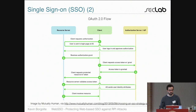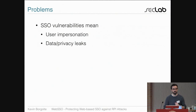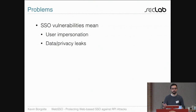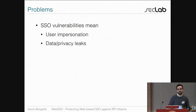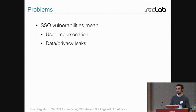The question is: if something goes wrong, what can go wrong? SSO vulnerabilities essentially mean you're either impersonating the user at an IDP level — for instance, if a malicious website gets the token that Google or Facebook should be sending to the New York Times, they could post on your wall on your behalf. Or it might result in data or privacy leaks, such as Stack Overflow fetching all your friends or phone numbers from Google.